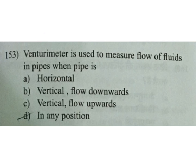Venturimeter is used to measure flow of fluids in pipes when the pipe is horizontal, downwards, vertical — in any position. D is the answer.